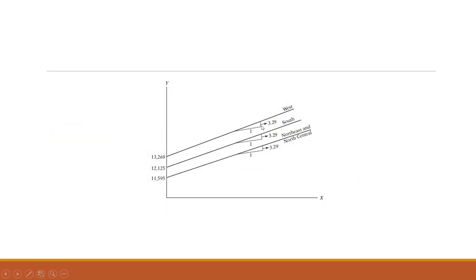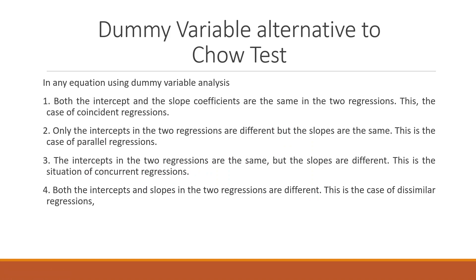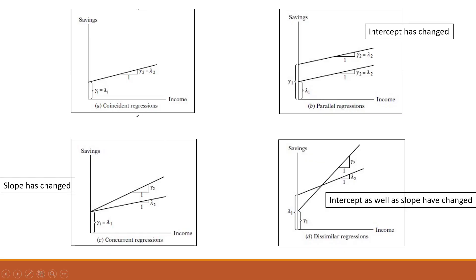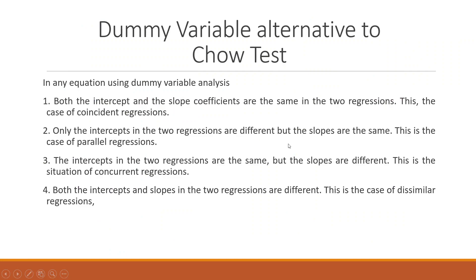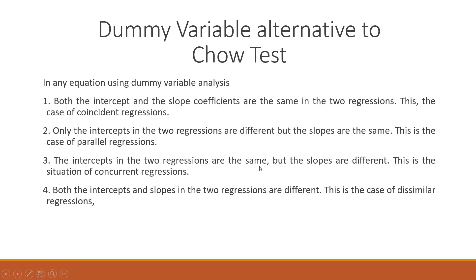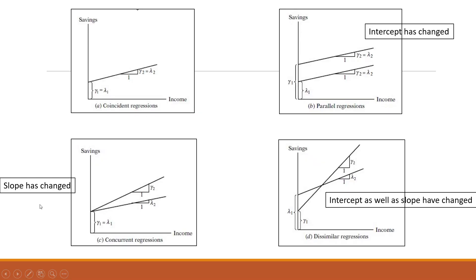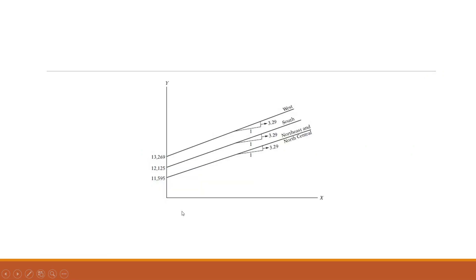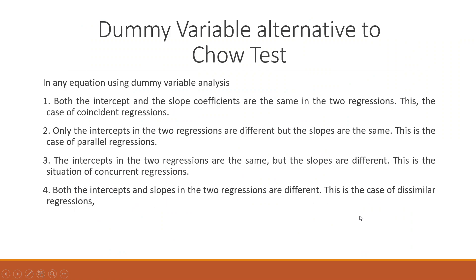When using dummy variable analysis as an alternative to Chow's test, we consider four possibilities. First, coincident regressions: both intercept and slope are the same in both regressions. Second, parallel regressions: only the intercepts differ, slopes are the same. Third, concurrent regressions: intercepts are the same but slopes differ. Fourth, dissimilar regressions: both intercepts and slopes differ in the two regressions.